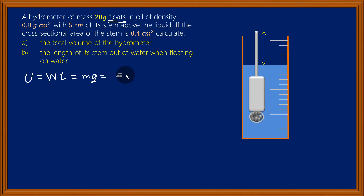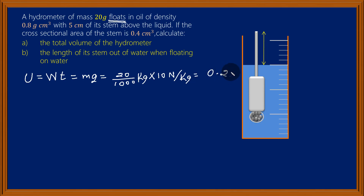Its mass is 20 grams, so I'm going to divide that by 1,000 to convert 20 grams into kilograms, and then multiply it by the value of the gravitational field strength — 10 newtons per kilogram. I find that the weight of this hydrometer is 0.2 newtons. By working out the weight of the hydrometer, I know the upthrust which is acting on it. Then I go to the usual statement of Archimedes' principle, which states that upthrust is given by the density of the fluid times the volume of the liquid displaced times the gravitational field strength.